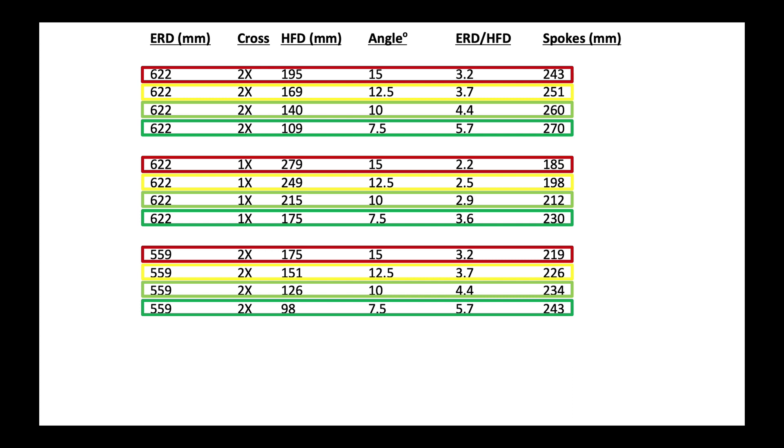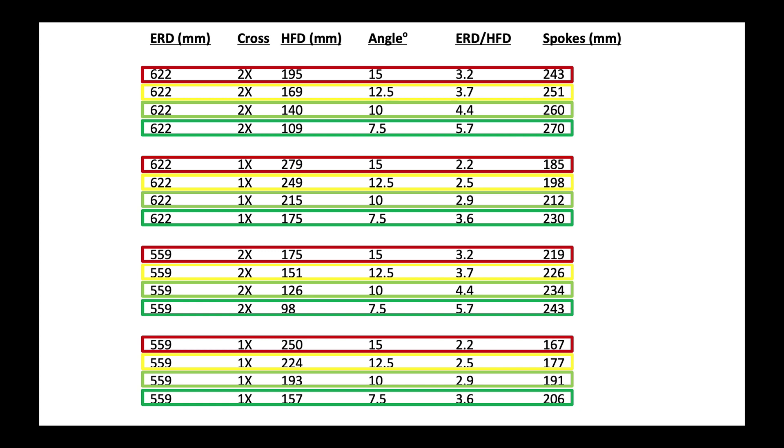In the same way we'll see the same kind of trend if we compare two cross patterns with a 559 millimeter ERD with the same hub and rim laced up as a one cross. Looking again at the green blocks for a 559, a two cross, and a one cross, with a one cross I can have an acceptable angle with a larger hole flange diameter hub.